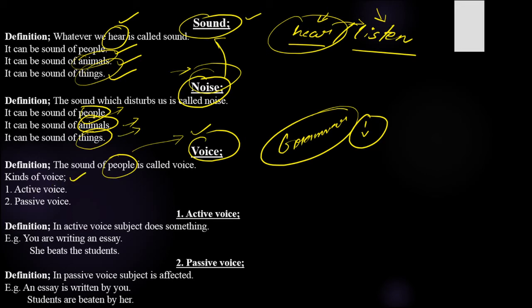When I'm talking with you, that is voice for you. Before, when sound was just passing, it was sound — but when it is the sound of people discussing, it is known as voice. Now we will discuss the kinds of voice. There are two kinds of voice: active voice and passive voice. The first kind we are going to discuss is active voice.